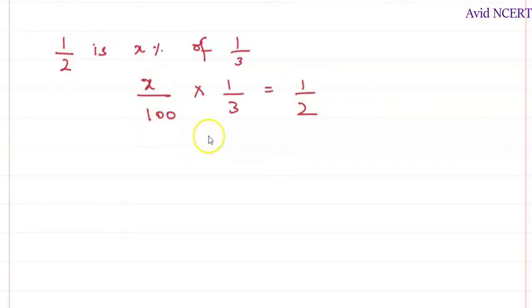So x by 3 times 100 is 300, which is equals 1 by 2. So x equals, so it is division on this side. So 300 goes that side becomes numerator. So which is 300 by 2. So x equals 150 percentage.